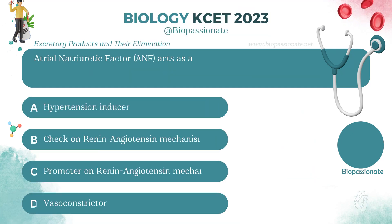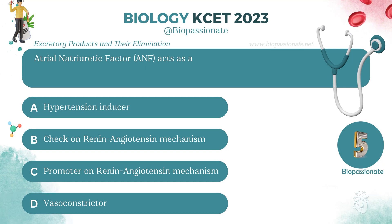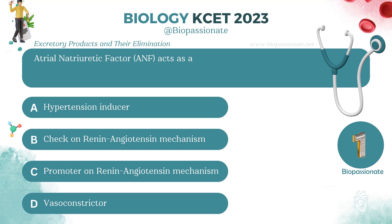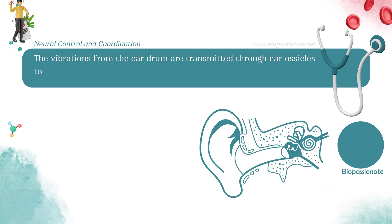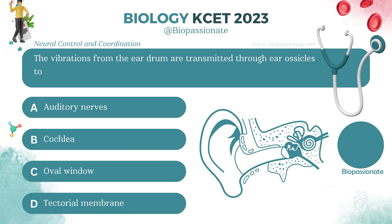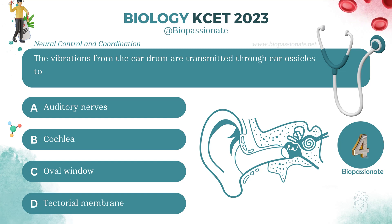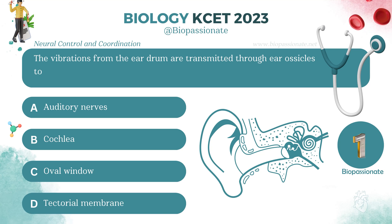Atrial natriuretic factor (ANF) acts as a check on the renin-angiotensin mechanism. The vibrations from the eardrum are transmitted through ear ossicles to which structure? Answer: Oval window.